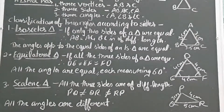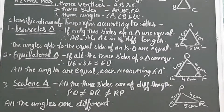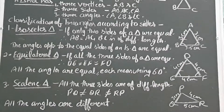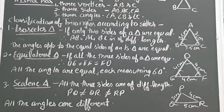The angles opposite to the equal sides of an isosceles triangle are always equal. For example, if angle B is 50 degrees then angle C will also be 50 degrees. The second type is the equilateral triangle — clear from the name itself. If all three sides are equal, it is an equilateral triangle. In triangle DEF, DE equals EF equals FD, each measuring four centimeters, and all angles equal 60 degrees, since the angle sum of a triangle is 180 degrees.